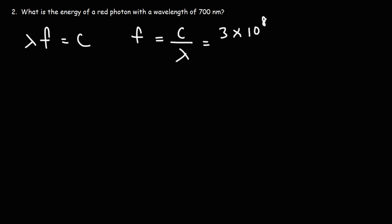And the speed of light, which is the same for all types of electromagnetic radiation in a vacuum, is 3 times 10 to the 8 meters per second. The wavelength is 700 nanometers. And a nanometer is 10 to the minus 9 meters. So the unit meters will cancel.